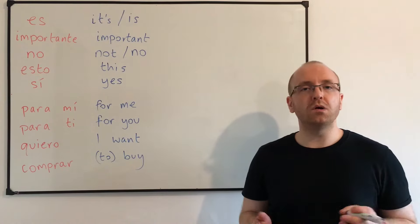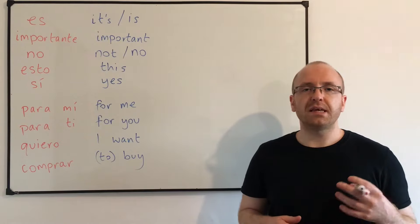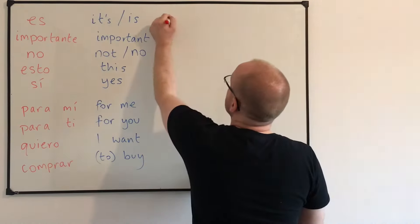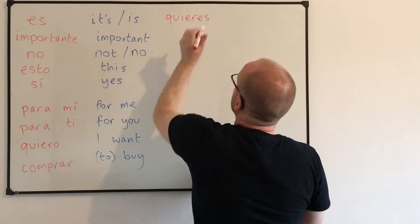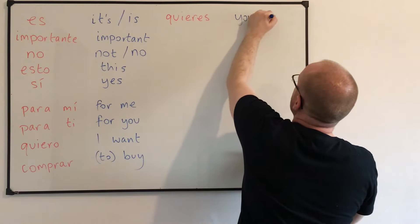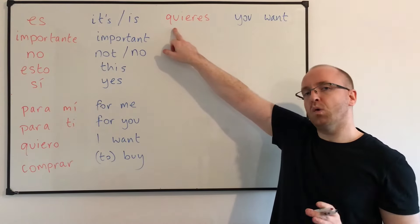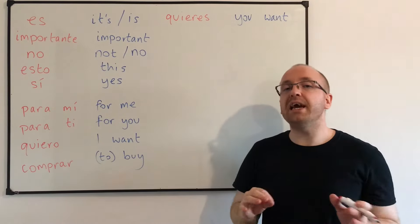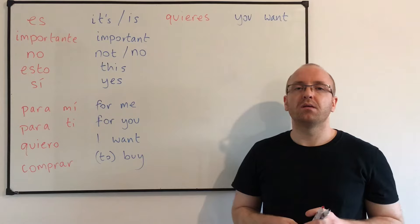So we've learned 'I want.' Now the word for 'you want' is 'quieres.' Remember QU always makes a C sound, and the IE is like a Y sound, so 'quieres.' Can you say that for me? Quieres. Good.